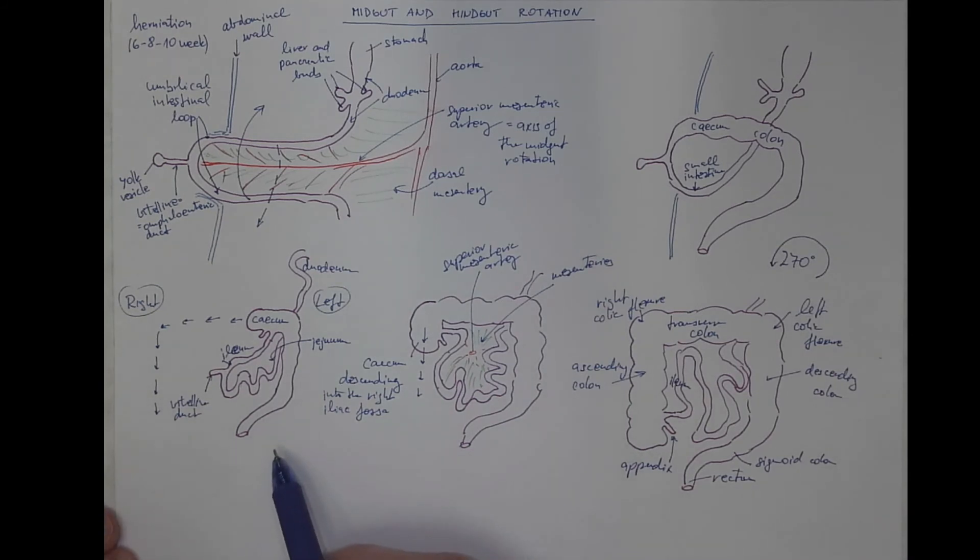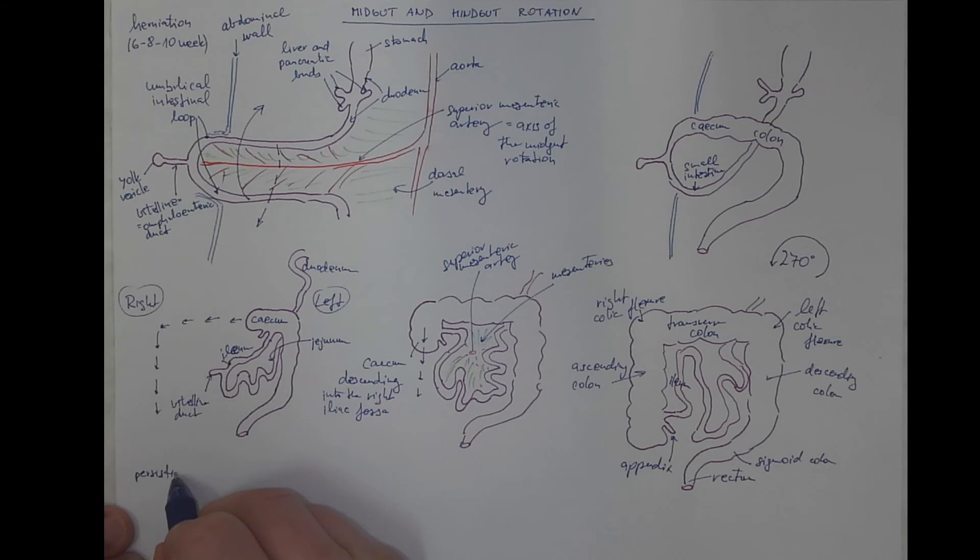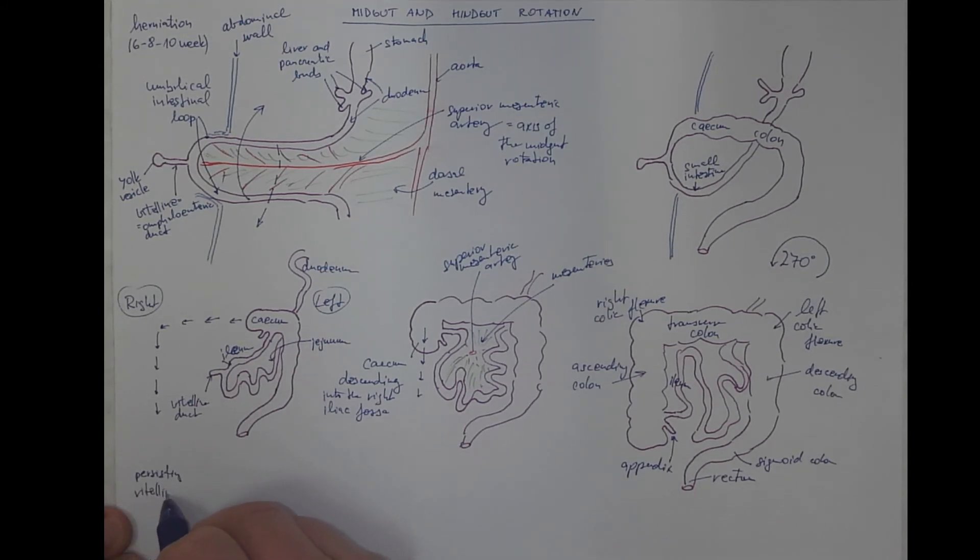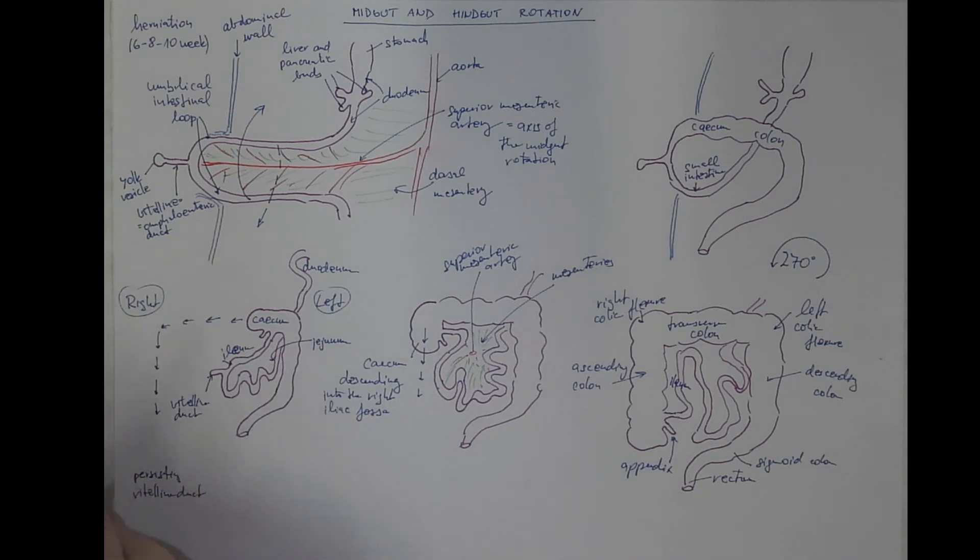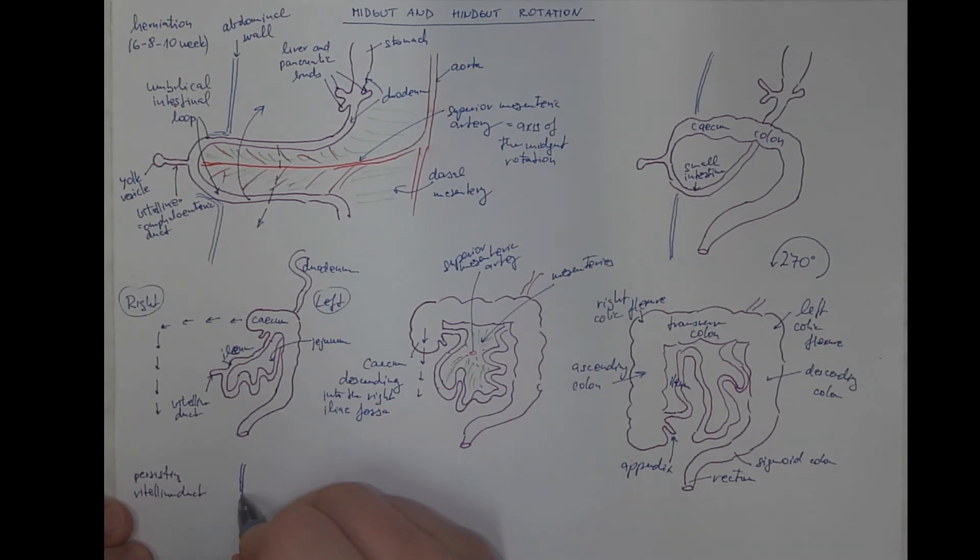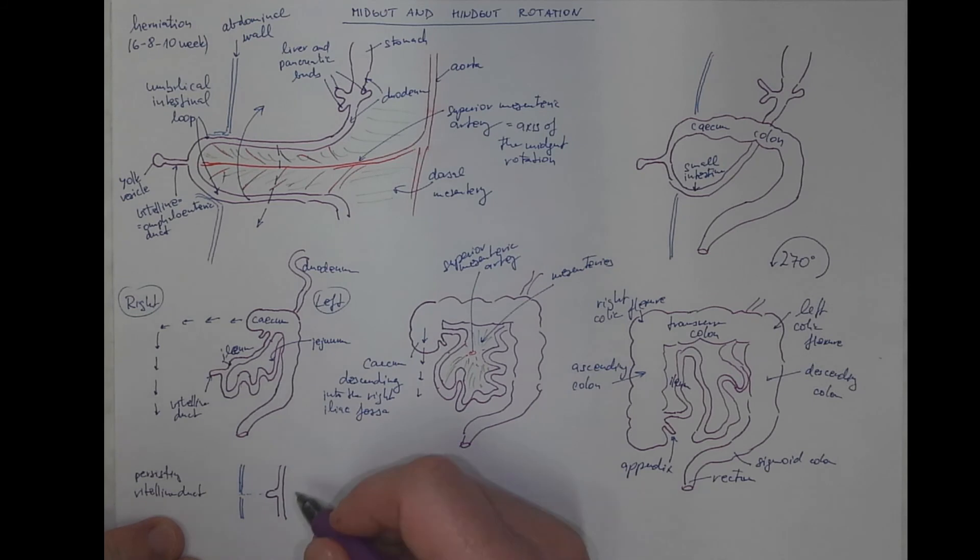Now what happens if this vitelline duct does not disappear completely? Persisting vitelline duct. There are various conditions. One would be like this. With the umbilical region. And the ligament. A vitelline ligament. Connecting the persisting part of the vitelline duct. Which would be found on the ileum. Like two to three feet from the ileocecal junction.